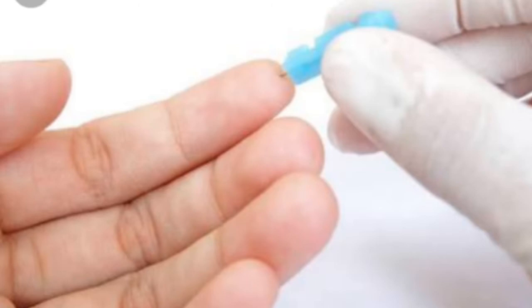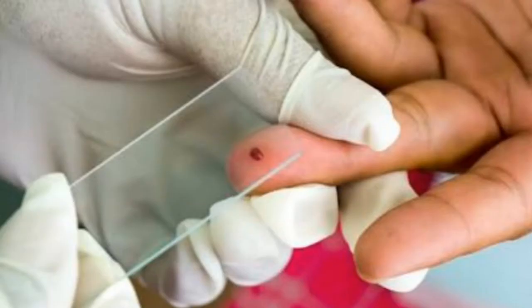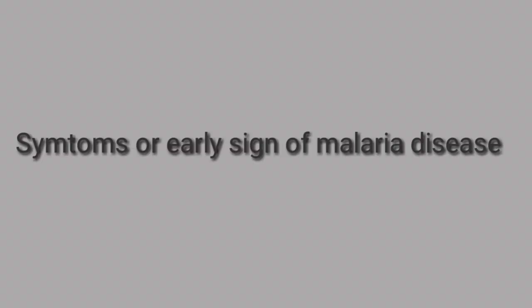By blood test we can find out whether a person has malaria or not. First, with a needle, the finger is pricked and three to four drops of blood are taken onto a glass slide, and it is then examined under a microscope for malaria germs.